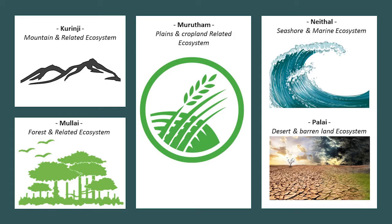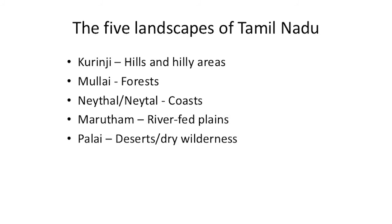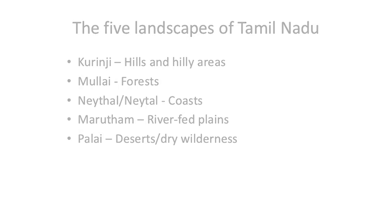Landforms of Tamil Nadu: The 5 types of landforms in Sangam age were divided on the basis of the work done by the people. These landforms are called thinai. The word thinai means land. These are kurunji or mountain regions, mullai or forest, and marudam the fertile agricultural land and plains.